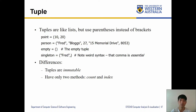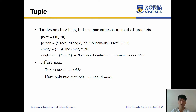Tuples are a little bit different. They have similarities — they're also like a container — but instead of using square brackets you're going to use round brackets, the parentheses. The key difference is that tuples are immutable. Mutable means changeable, so immutable means we cannot change the stuff inside. Once you create a tuple, the items in it are no longer changeable, and tuples only have two methods: count and index.